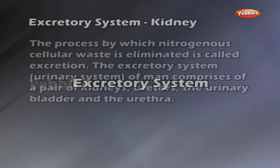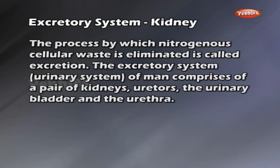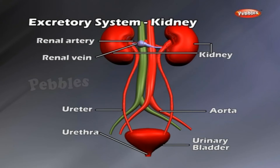The process by which nitrogenous cellular waste is eliminated is called excretion. The excretory system, also known as the urinary system of man, comprises of a pair of kidneys, ureters, the urinary bladder and the urethra.